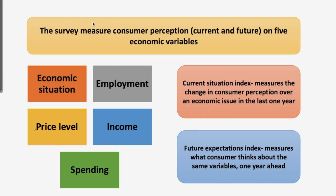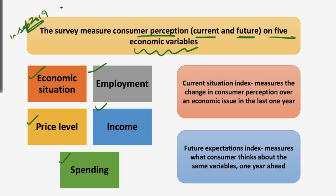This consumer confidence survey is conducted by RBI in major cities of India over 5,000 respondents and measures consumer perception for the current as well as the future on five economic variables. In September 2019, this index witnessed a six-year low. The current situation index reached 89.4, the lowest in the Modi governance. When the index is below 100, consumer confidence is in the zone of pessimism; if above 100, it is in the zone of optimism.